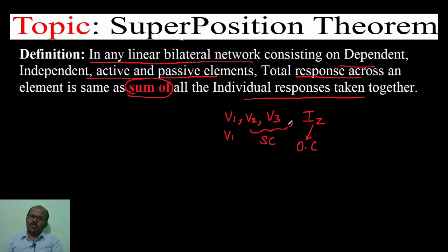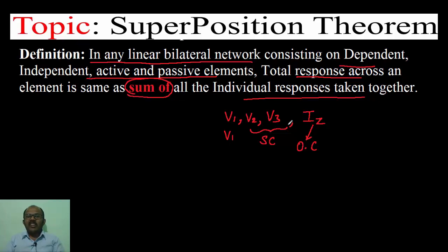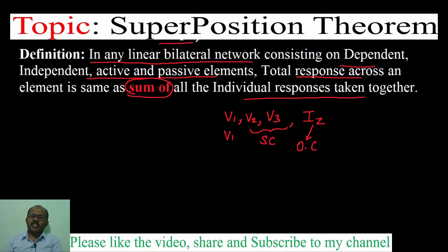If I relate superposition theorem to a family: if I ask what is the income of your family, you would say your father's income plus your mother's income plus your sibling's income plus your own income — all individual incomes together make up the family income. This is how superposition theorem is defined.